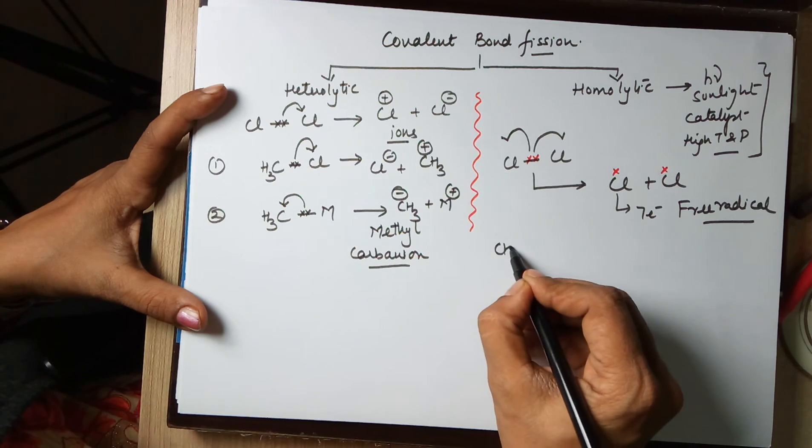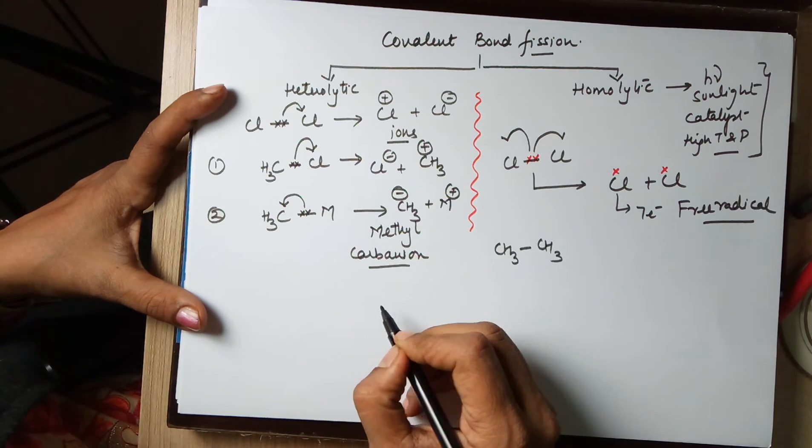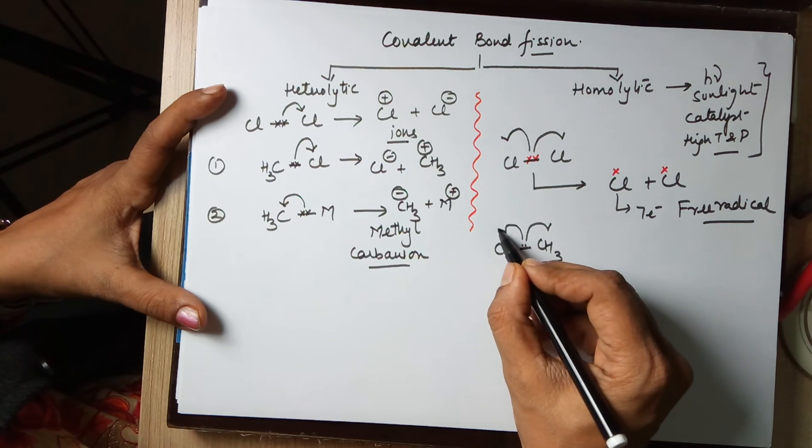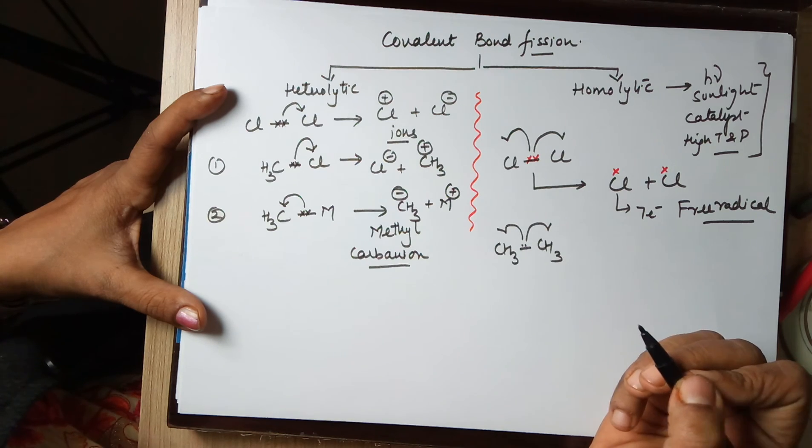Similarly, if I take the example of a methyl group bonded to a methyl group, the shared pair of electrons in this case under special conditions undergoes cleavage. Each carbon atom takes away its own electron and leads to the formation of methyl free radicals.